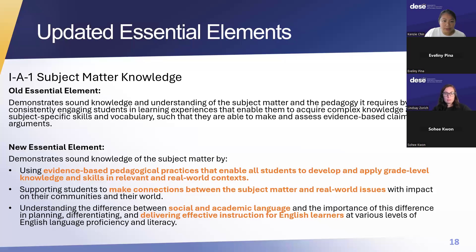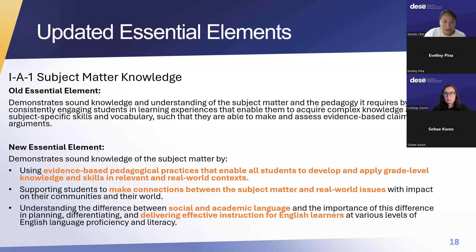There are seven essential elements. The first is subject matter knowledge. The new essential element reads: the candidate demonstrates sound knowledge of the subject matter by using evidence-based pedagogical practices that enable all students to develop and apply grade-level knowledge and skills in relevant and real-world contexts, supporting students to make connections between the subject matter and real-world issues with impact on their communities and their world, and understanding the difference between social and academic language and the importance of this difference in planning and differentiating and delivering effective instruction for English learners at various levels of English language proficiency and literacy.